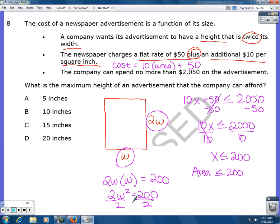So divide both by 2. W squared equals 100. Take the square root. And W is going to be 10 inches.